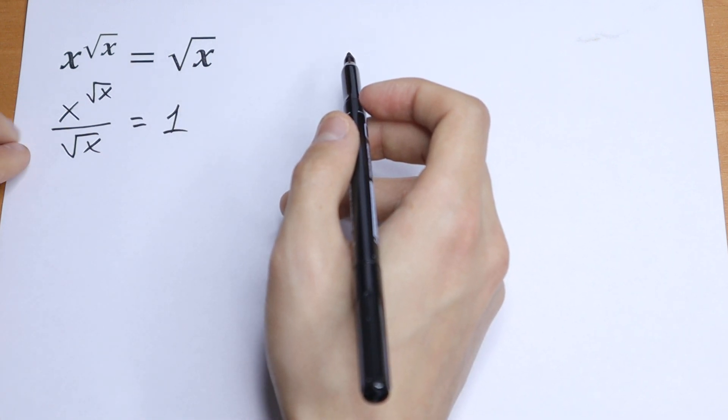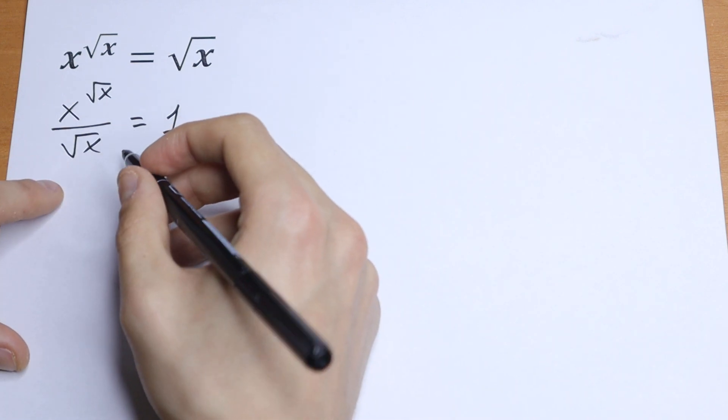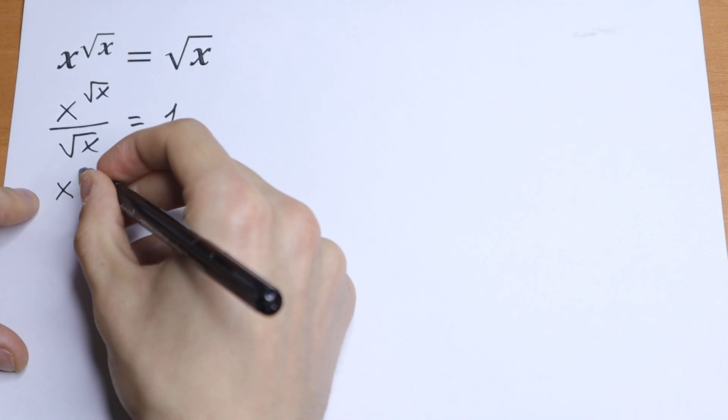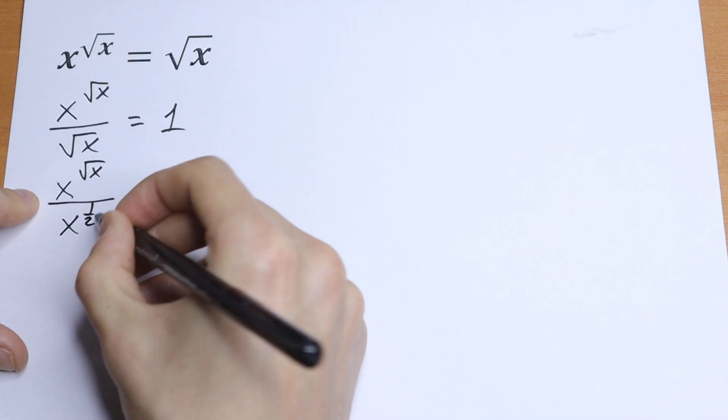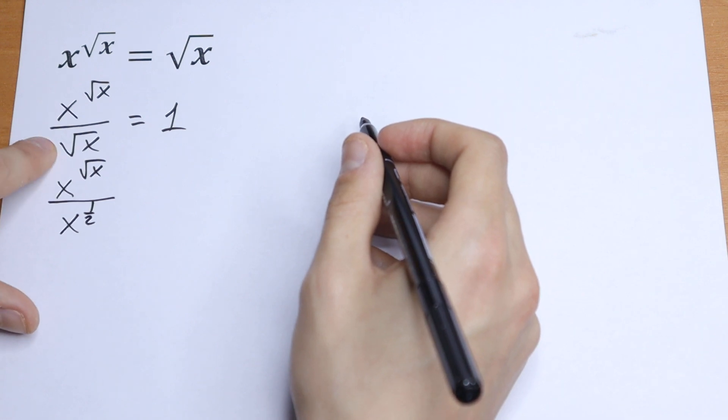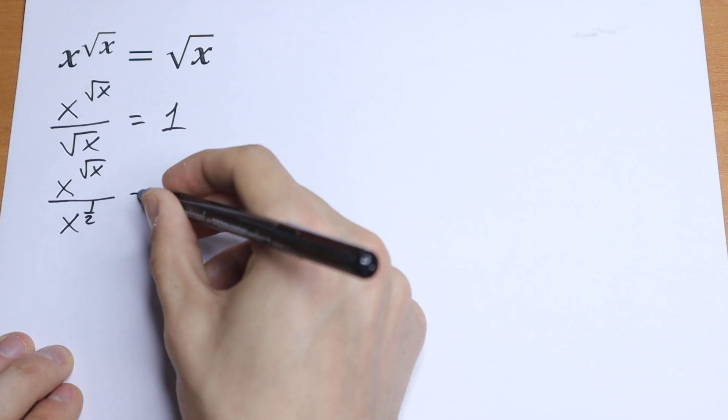What we're going to do next? Right here we can write this square root of x in a different way: x to the power square root of x over x to the power one-half. Nothing changes, just write our square root sign like this. Equal to 1.